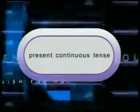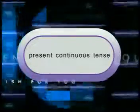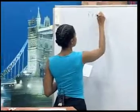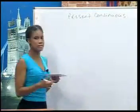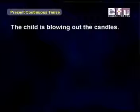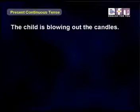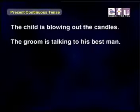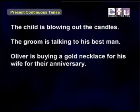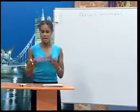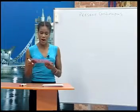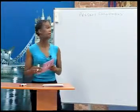Present continuous tense. Now let's begin with a quick review of the present continuous. The present continuous tense describes actions that are in progress — happening now. Let's look at some examples. The child is blowing out the candles. The groom is talking to his best man. Oliver is buying a gold necklace for his wife for their anniversary. They are going to the store to buy wine for the New Year's Day party. We use the present continuous tense to talk about an action that is happening now. The present continuous is also called the present progressive.